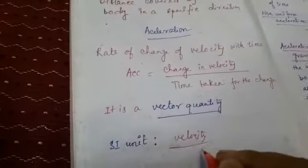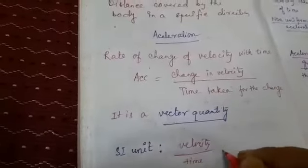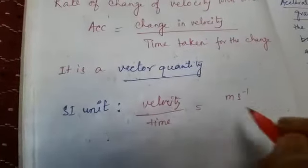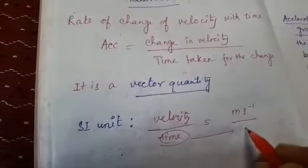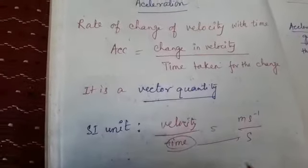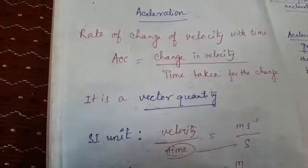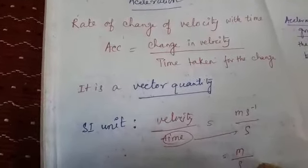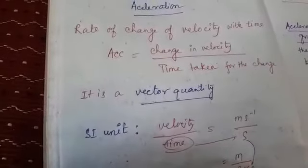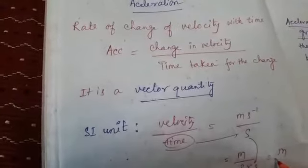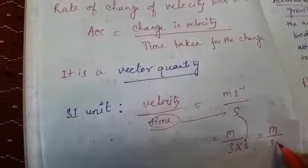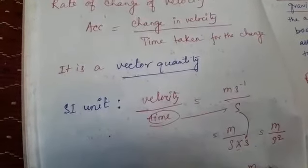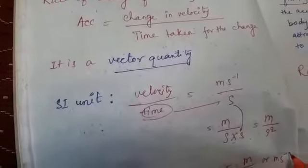The unit of velocity is meter per second, so I am writing meter per second inverse. Divided by the unit of time, which is second. So we can write meter — this second inverse will go down and become second squared. So the unit of acceleration is meter per second square, or you can write meter second minus two.